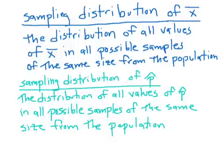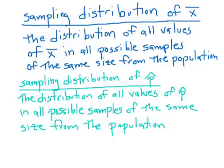The sampling distribution of x-bar is the distribution of all values of x-bar in all possible samples of the same size from the population. Like when we put up post-it notes representing five women — if we had done all possible post-it notes of five women, that would be the sampling distribution of x-bar. It's about what shape is the distribution of all possible samples.